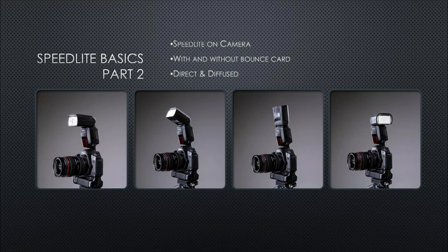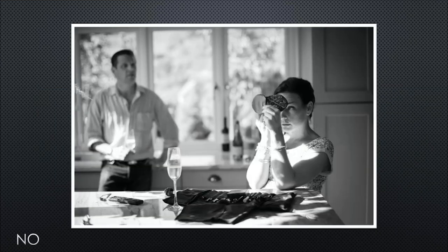At present I'm using the Yongnuo speedlights, why? Because it's a cheap entry into speedlights. The rate I go through speedlights, even in the good old days of Canon, it's just too expensive. So I'm always trying to find a cheaper alternative. When talking through these images, I'm going to talk about bounce, direct, side light, and so on.